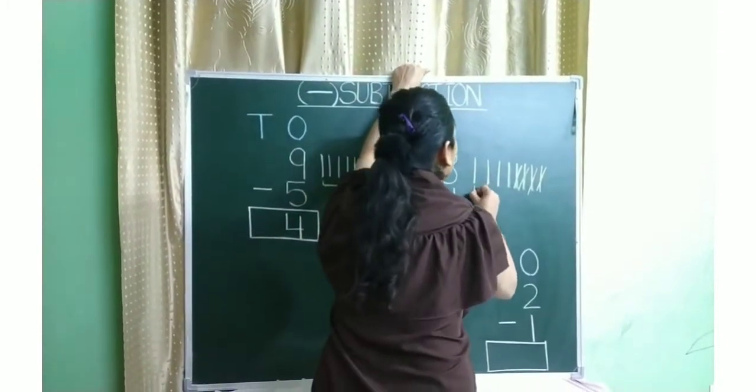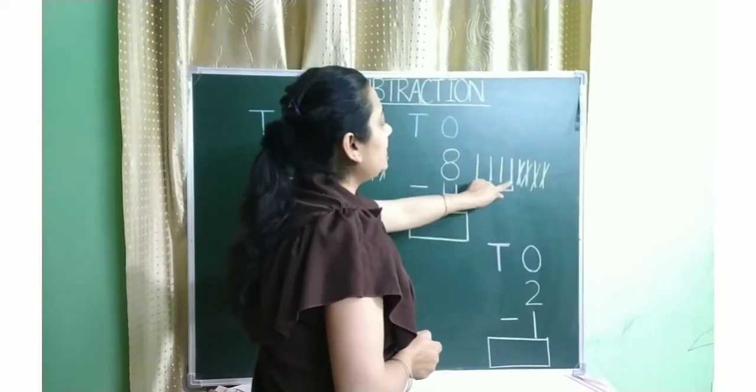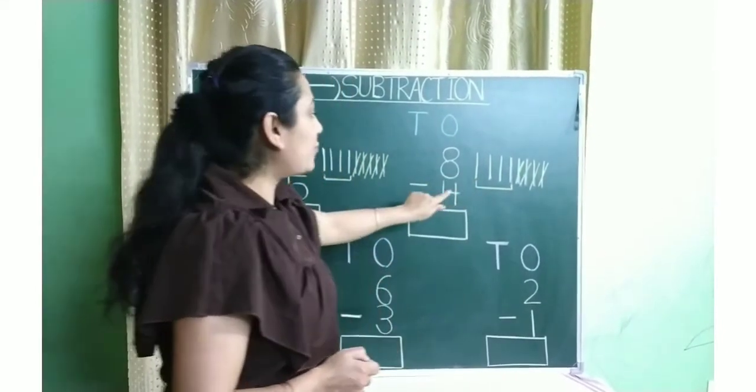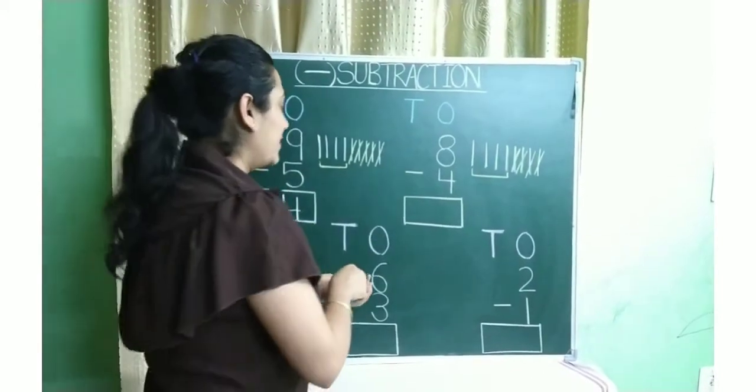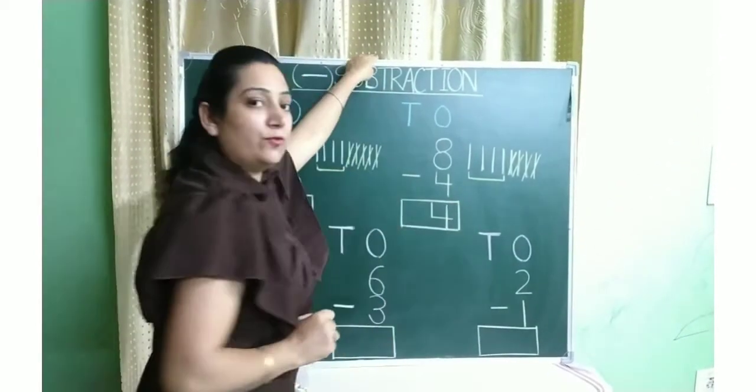So how many lines are left? Let's count. 1, 2, 3, 4. So when we subtract number 4 from number 8, our answer will be number 4. Yes, children. So I will write here number 4.